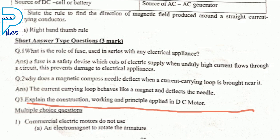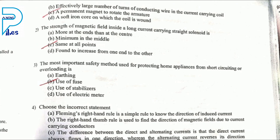If a generator uses direct current, it is called a DC generator. Direct current is available in batteries and cells. Commercial electric motors do not use a permanent magnet to rotate the armature. Instead, they use soft iron core and a large number of turns of conducting wire. When electricity is sent through the coil in commercial motors, it behaves like an electromagnet.